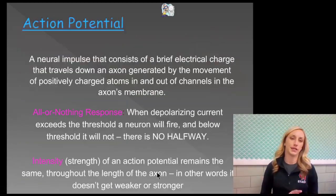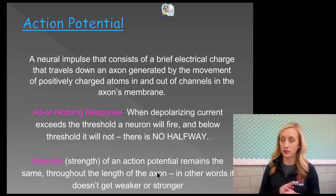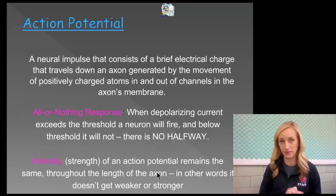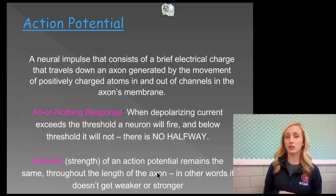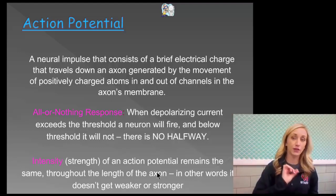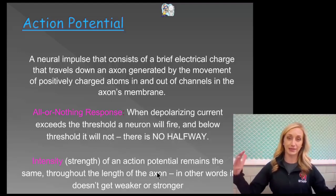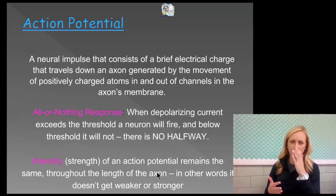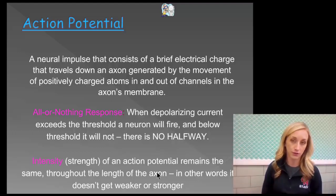So what is action potential? A neural impulse is all it is. Action potential is simply the neural impulse that goes down the axon of the neuron. It's a brief electrical charge that travels down the axon, generated by the movement of positively charged atoms in and out of channels in the axon's membrane. These channels are simply like doorways — just like an ion can't walk through the wall of a neuron, it needs a channel.